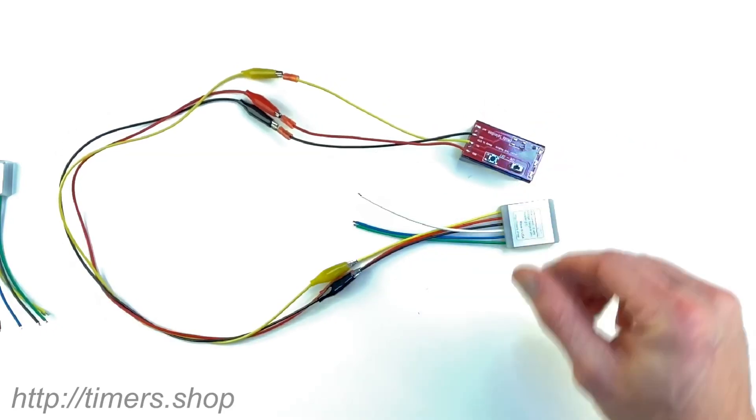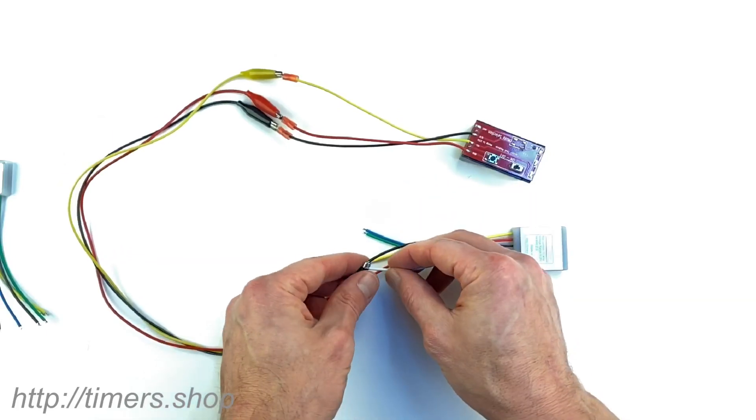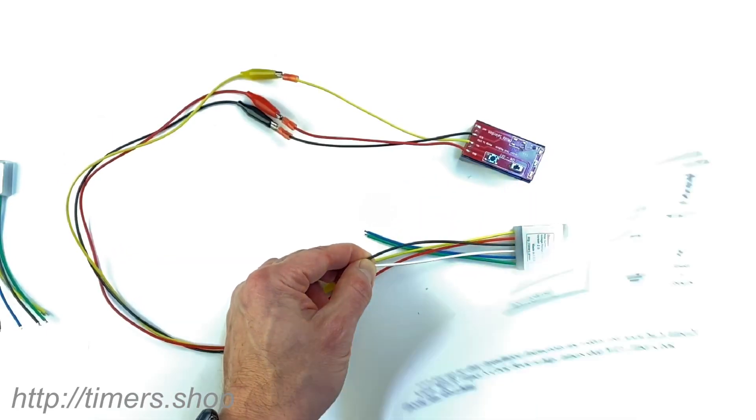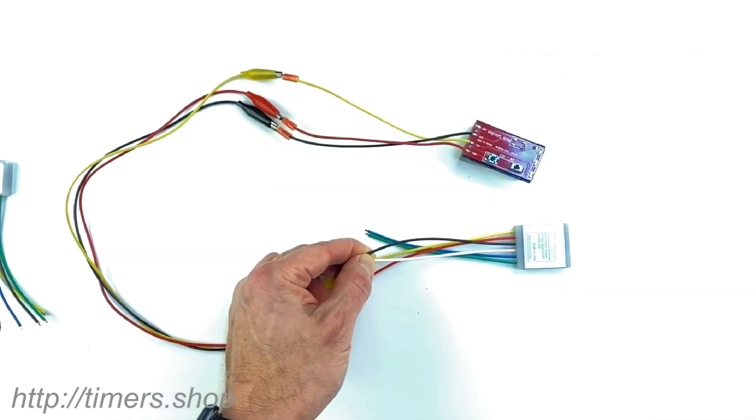I'm going to turn it off. To put the timer into programming mode, we will take the white wire and ground it. As you see in the manual here, we would ground this wire first and then supply the power.